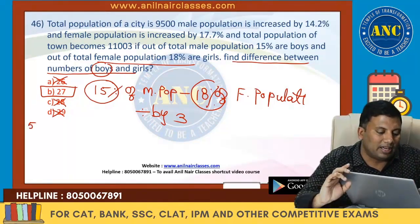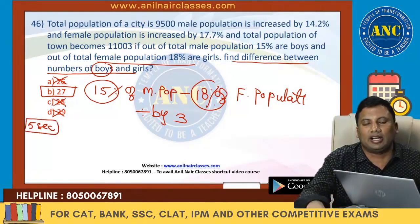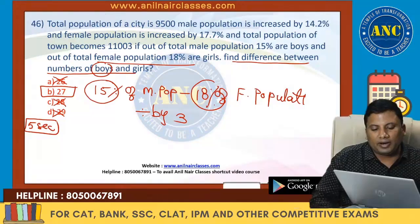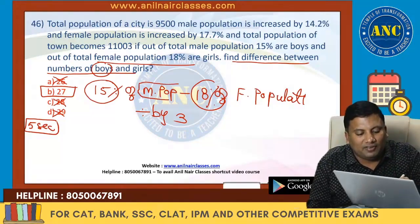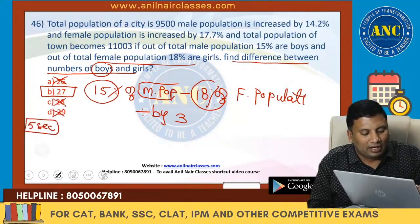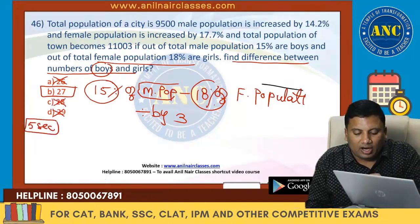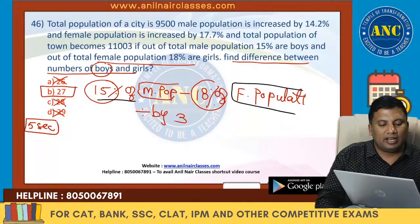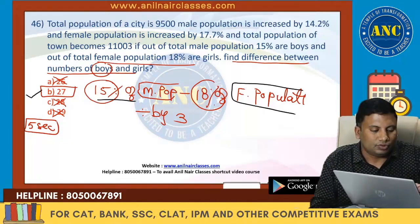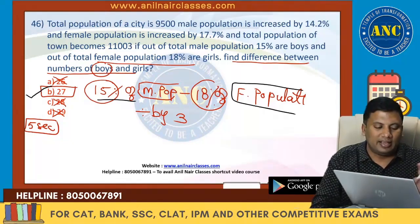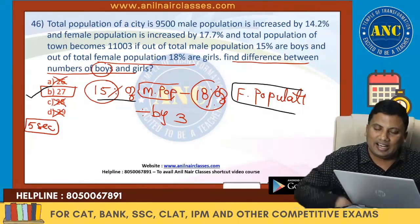I told my students that this question should have been attempted immediately. It is a 5-second problem. 15% of male population is always an integer — it cannot be a decimal. 18% of female population is also always an integer. Integer minus integer is an integer, and the answer must be divisible by 3. The step-by-step process should be clear.